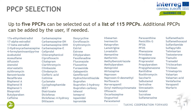In ModProcon you can select up to five PPCPs for the analysis. The list of PPCPs included in our database contains 115 different compounds. However, if at your test site you identify different PPCPs that you would like to consider, you can add them to the ModProcon database.